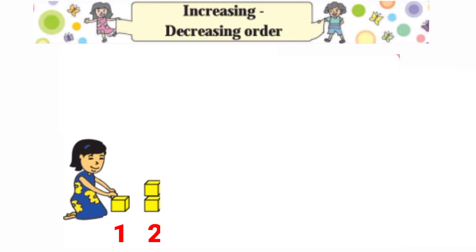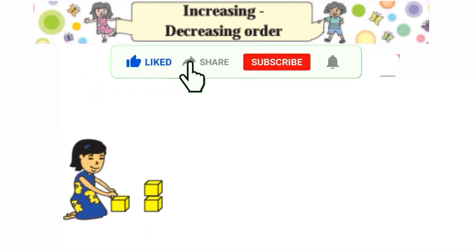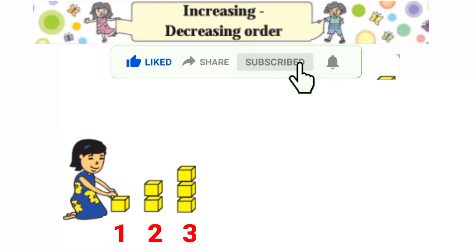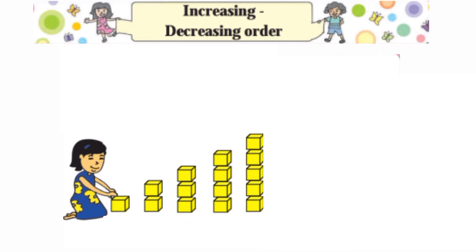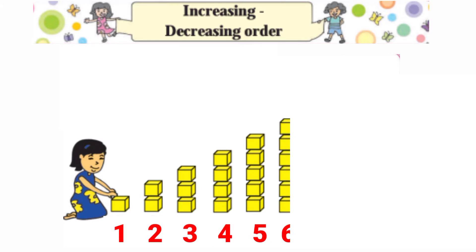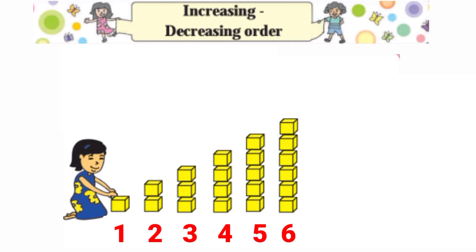Here you can see one block is there. The girl is arranging blocks in increasing order. First one block is there, then she has put two blocks, then three blocks, then four blocks, and five blocks are there. Aap deekh sakte ho ek se lekar hamare paas blocks barhte ja rahe hain. Here six blocks are there.